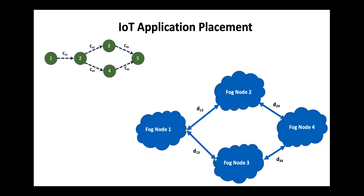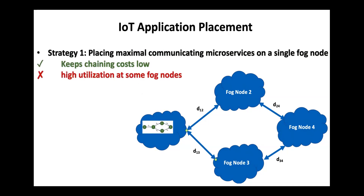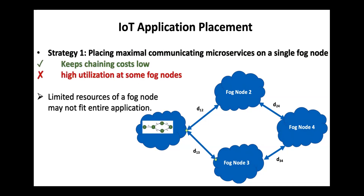A crucial component in fog computing is the placement of fog applications on a fog network. This determines the overall system performance in terms of energy consumption, communication cost, load balancing, and others. Placement of microservices can be done in two ways, representing a trade-off between two placement objectives. The first strategy is to place the maximally communicating microservices on a single fog node, which keeps the chaining cost between microservices low. But it leads to high utilization on some fog nodes, and may not be feasible because of limited resources at fog nodes.